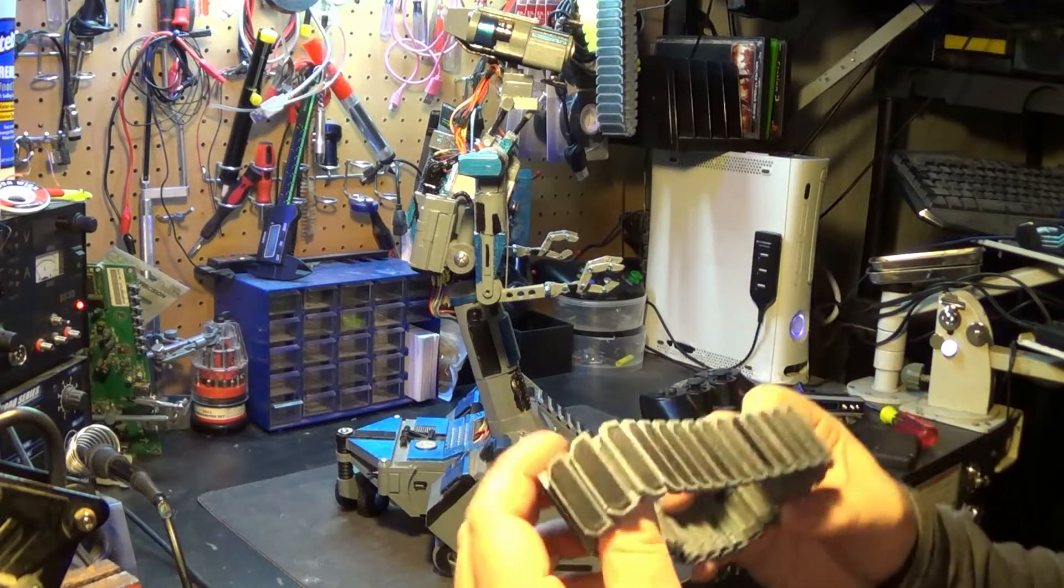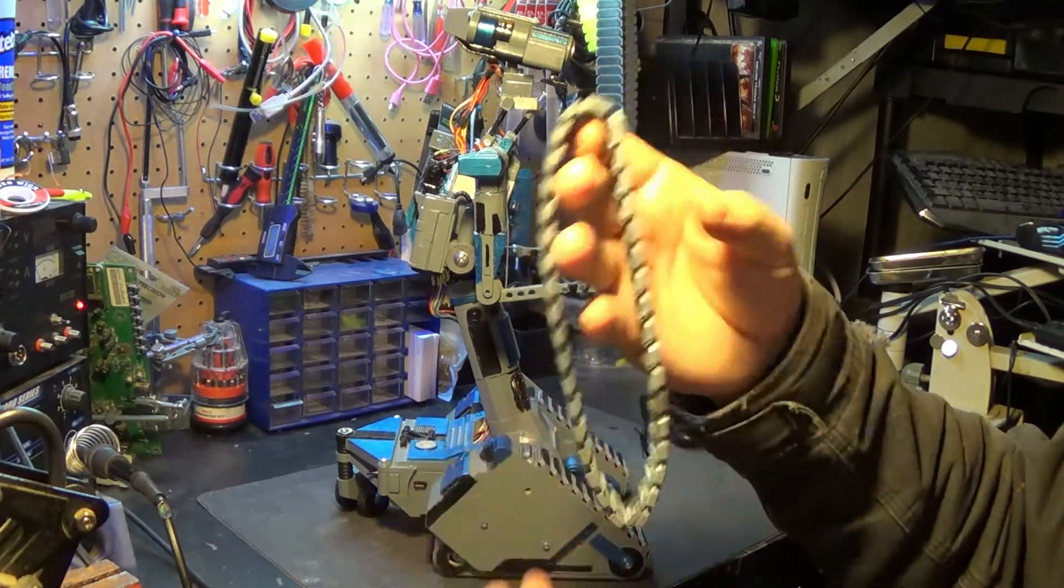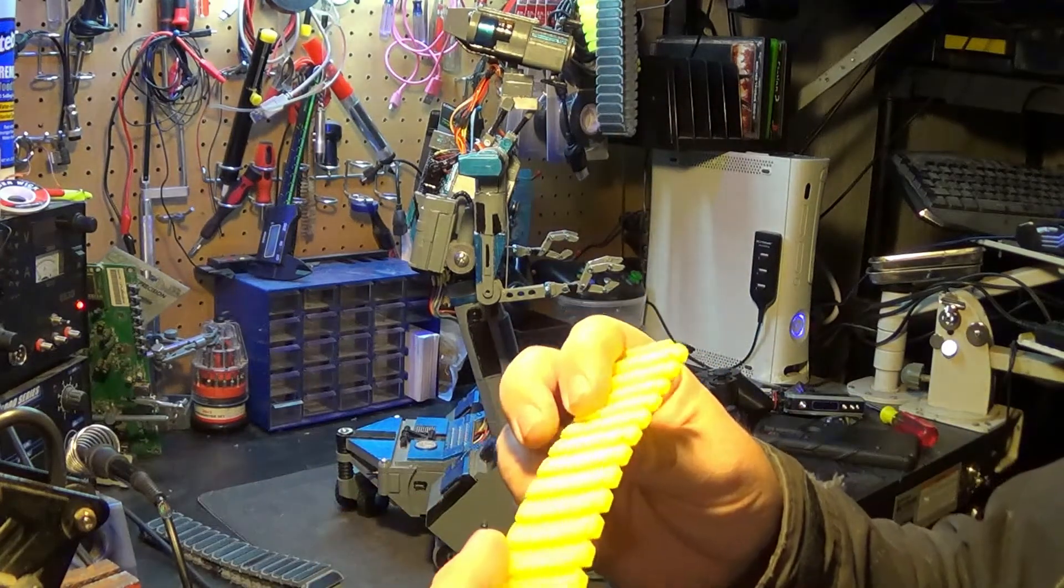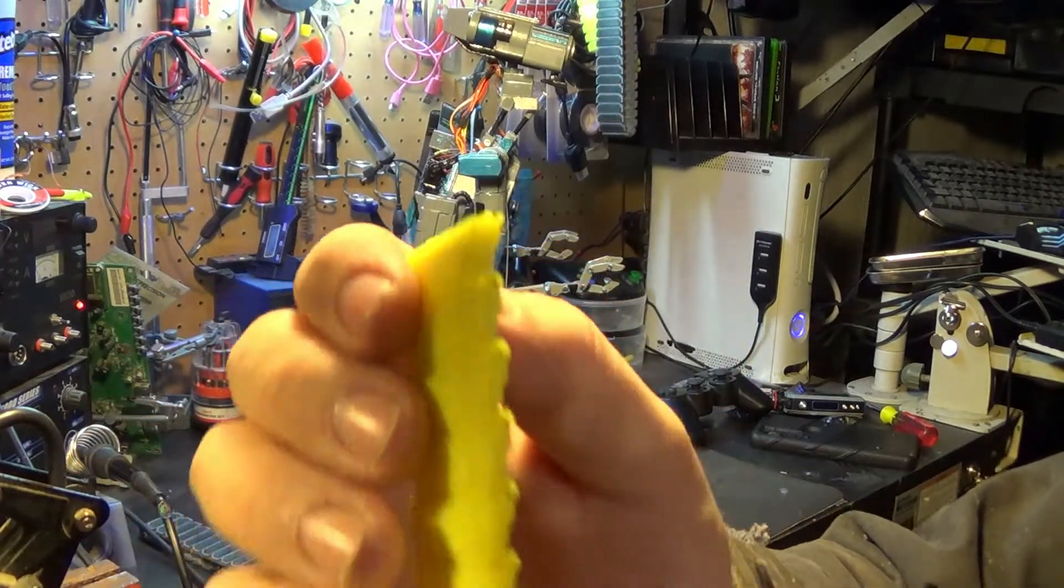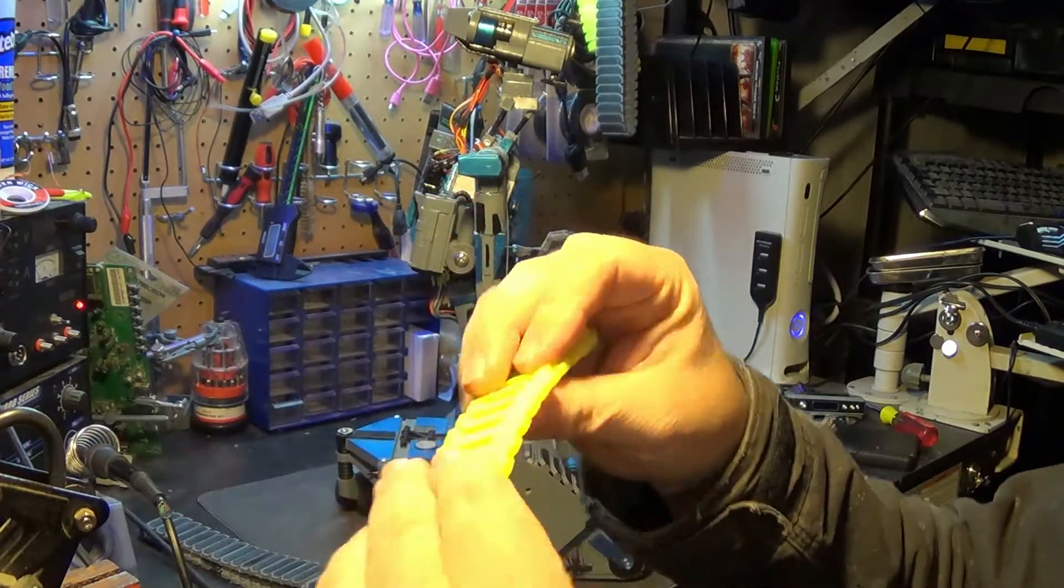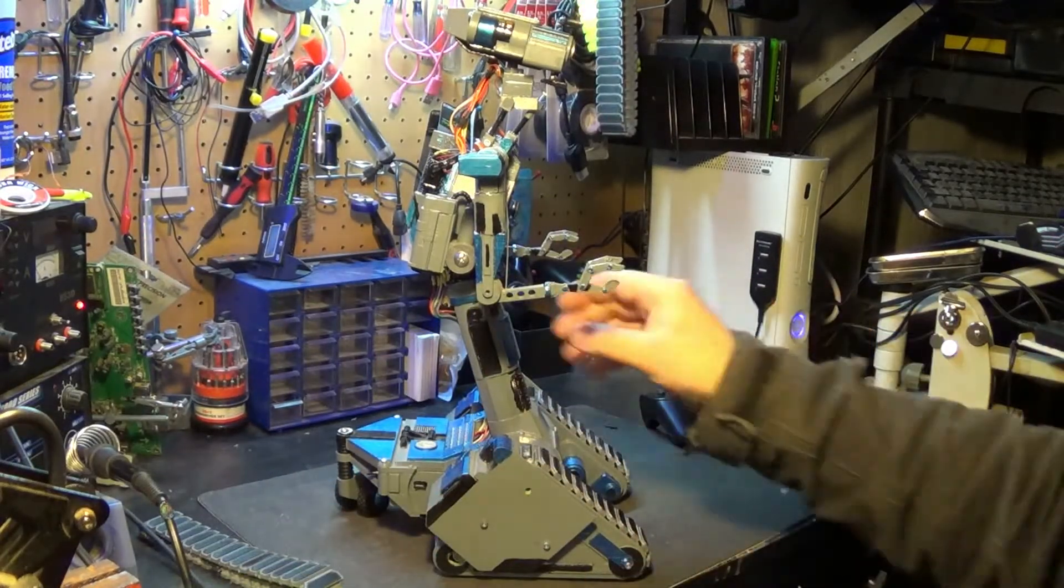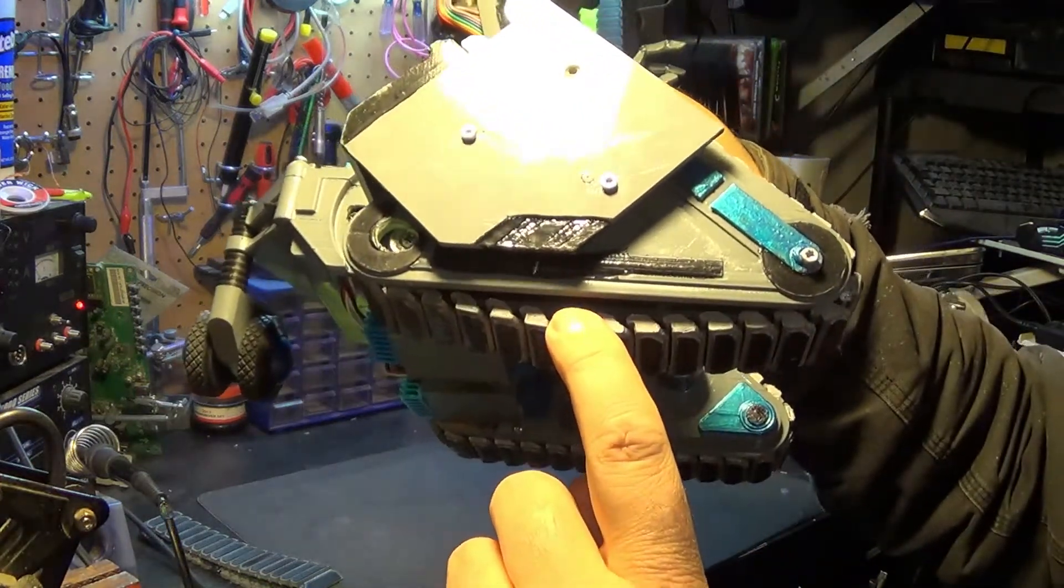So anyway, onto the tracks. Designed these through Tinkercad. Super easy tool. Anyone can do it. My first go-round, the little bit right here, the joints, would continuously snap.